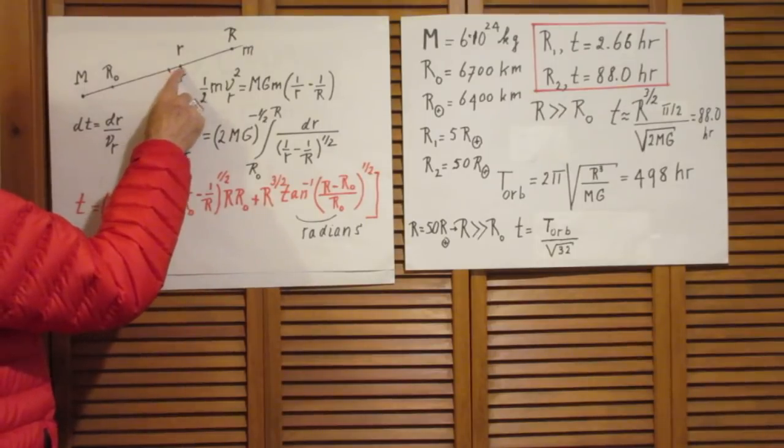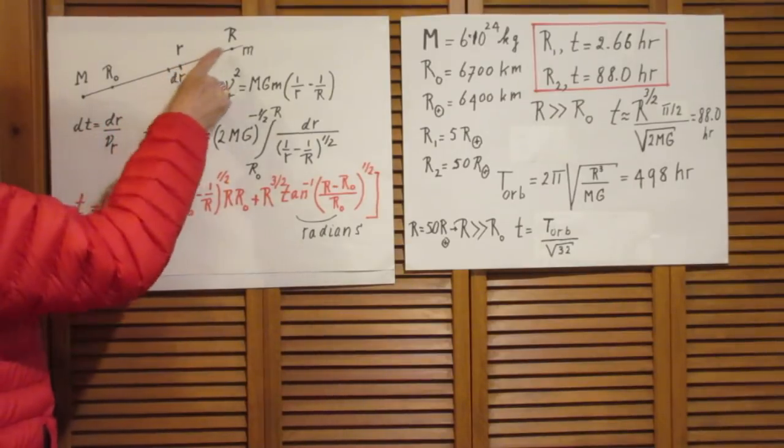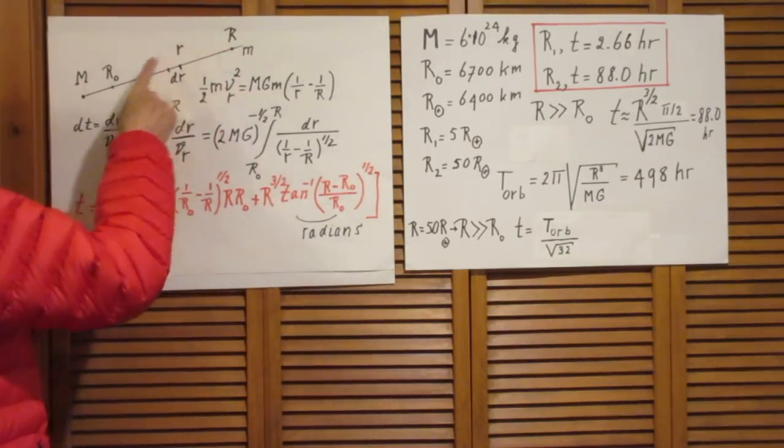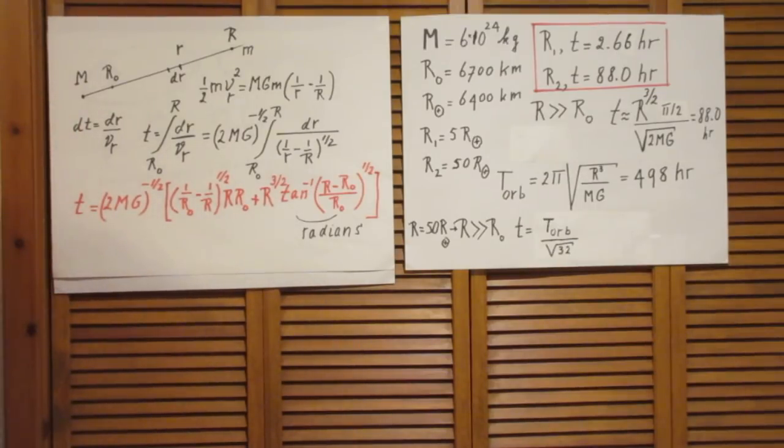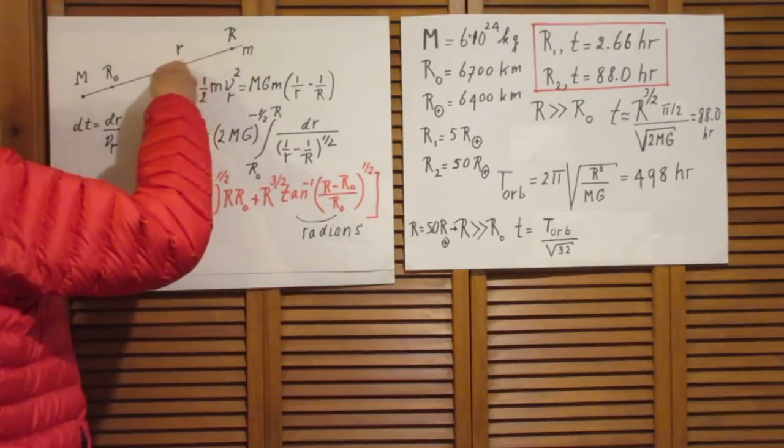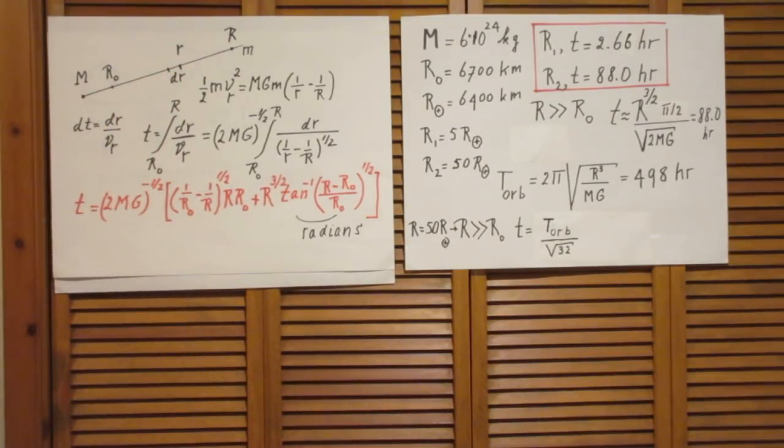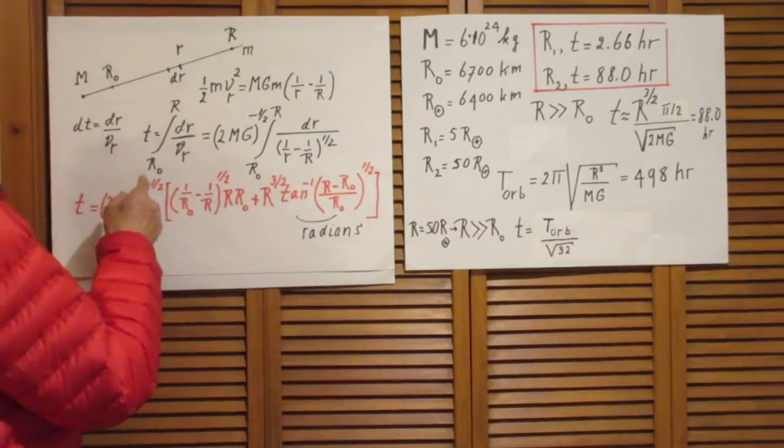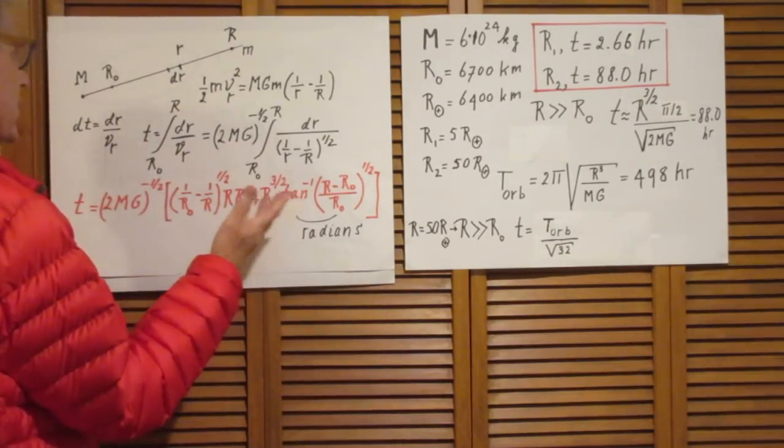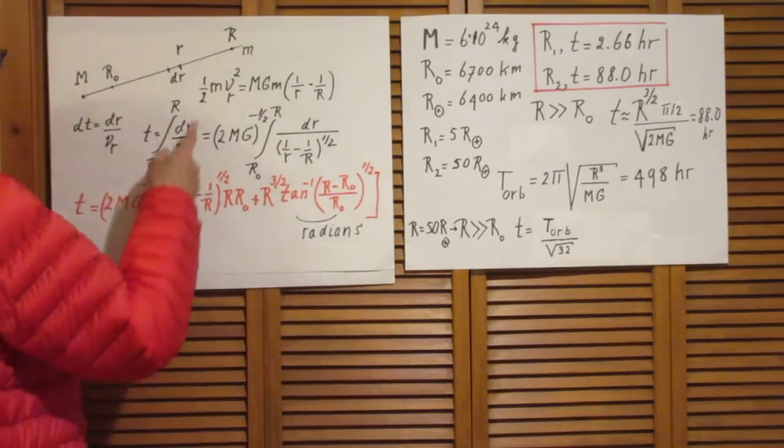So here you see one half mv squared at this location is the difference in potential energy and a little m cancels. So the time to move over the distance dr is, of course, dr itself divided by the speed. So now, in order to get the total time from here to there, you have to do an integral. Notice that when you move from here to R to R0, you go into the direction of minus dr.